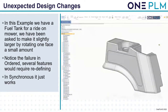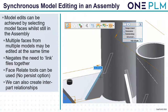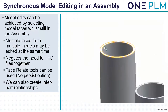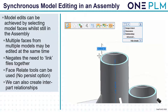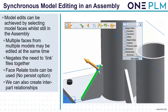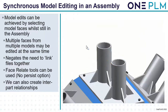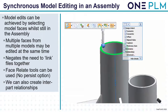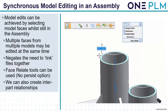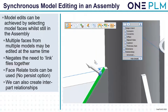Let's look at what we can do within assemblies. Model edits can be achieved by selecting model faces whilst in the assembly itself, and we can see all other models changing at the same time. Multiple faces from multiple models may be edited at the same time, removing the need to link files together. Face relate tools can be used but there's no persist option since we're doing it directly from the assembly. We can also create inter-part relationships between parts if we need some kind of automation.